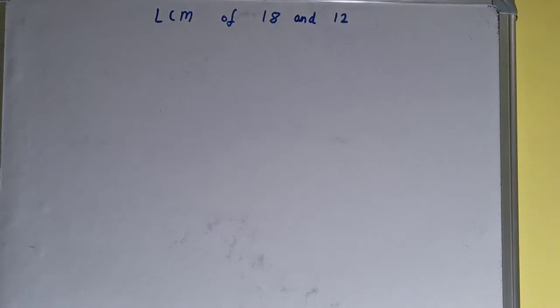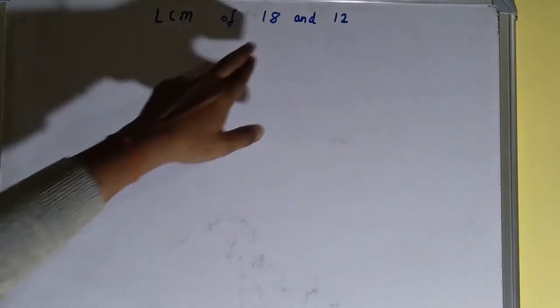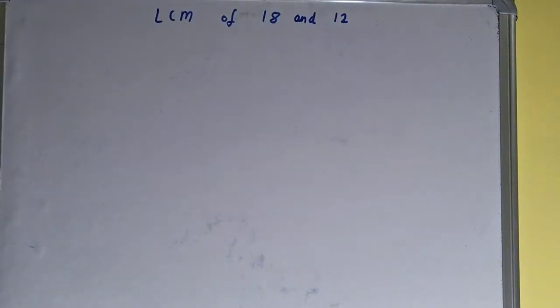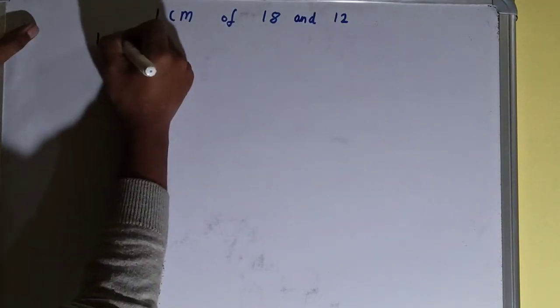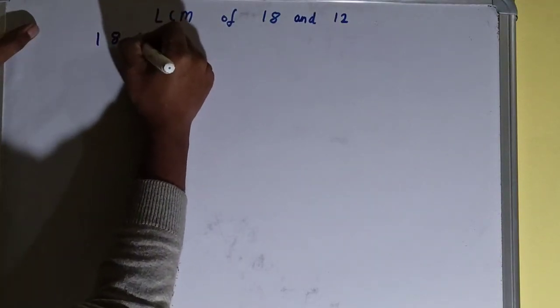Hello friends, and in this video I will be helping you with the LCM of the numbers 18 and 12. So let's start. To find it out, we need to write both the numbers like this: 18 comma 12.